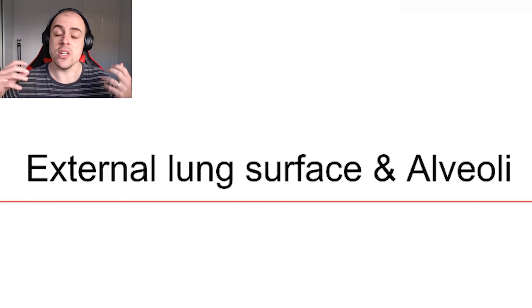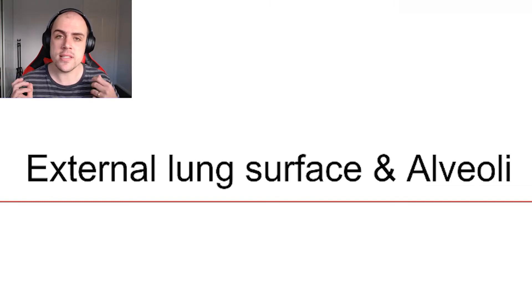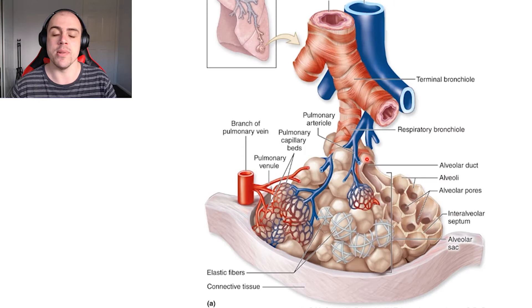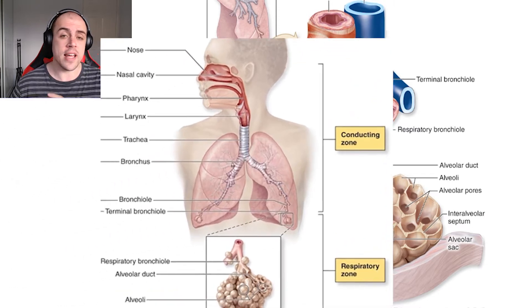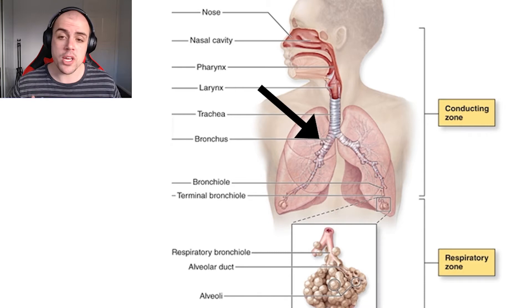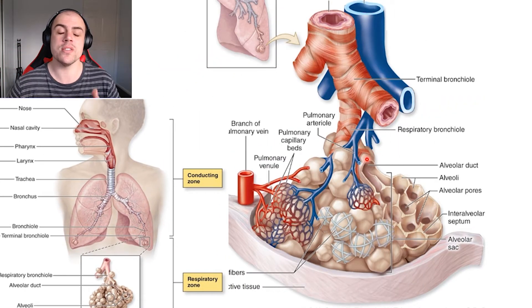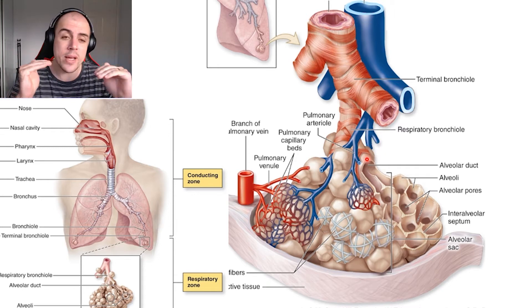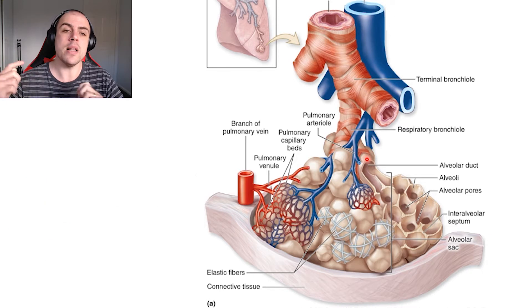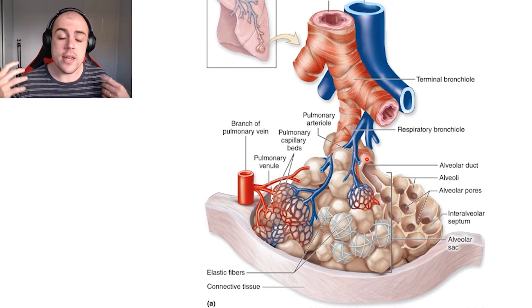Now that we're finished discussing the conduction system of the lungs, let us now talk about the respiratory section. This is where we see the exchange of gases between the lungs and the blood. A reminder that the entire purpose of the conduction system — nose, mouth, pharynx, larynx, trachea, and bronchioles down to the terminal and respiratory bronchioles — was to warm, humidify, and filter the air, as well as making sure it gets to this section of the lungs. Now that we've gotten there, we can begin respiration.